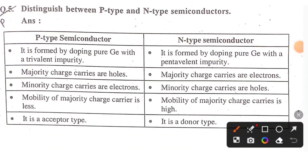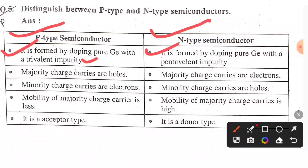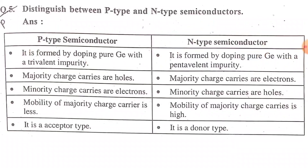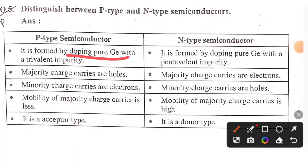This is the difference between p-type and n-type semiconductors. The p-type is formed by the doping of pure germanium with trivalent impurity. The n-type is formed by doping pure germanium with pentavalent impurity. This is the P-type and N-type.